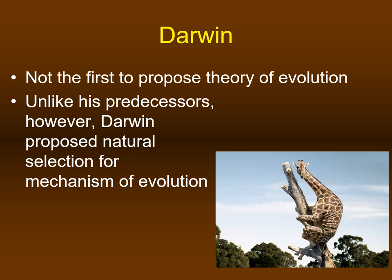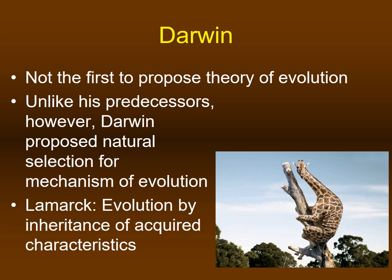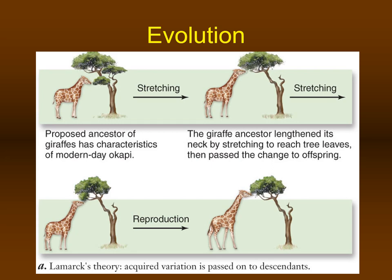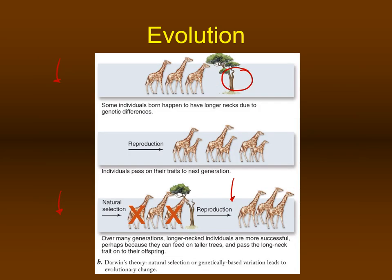Darwin was the first to suggest that the underlying mechanism of evolution is natural selection. Before Darwin, French scientist Lamarck proposed that evolution was driven by the inheritance of acquired characteristics. According to Lamarck, a giraffe trying to reach food on top of a tree would stretch its neck, and that elongated neck would be inherited, with each generation stretching even longer. This theory fails to explain why, if you chop off the foot of a rabbit, they still give birth to four-legged rabbits.